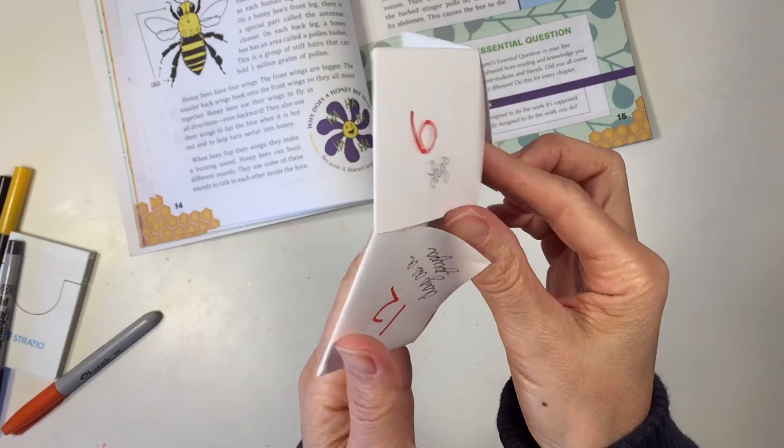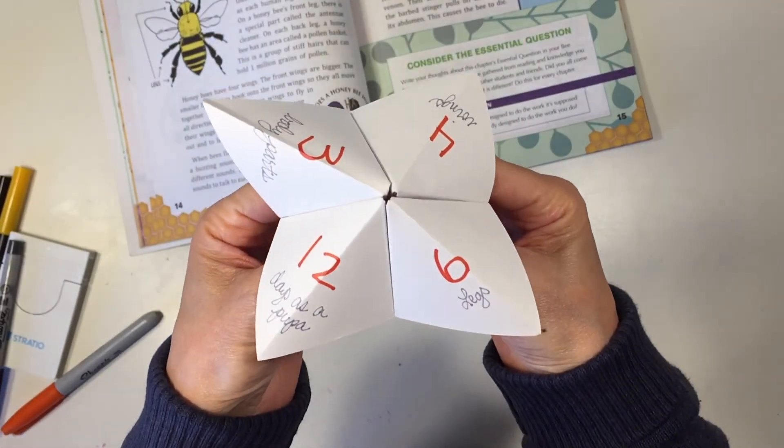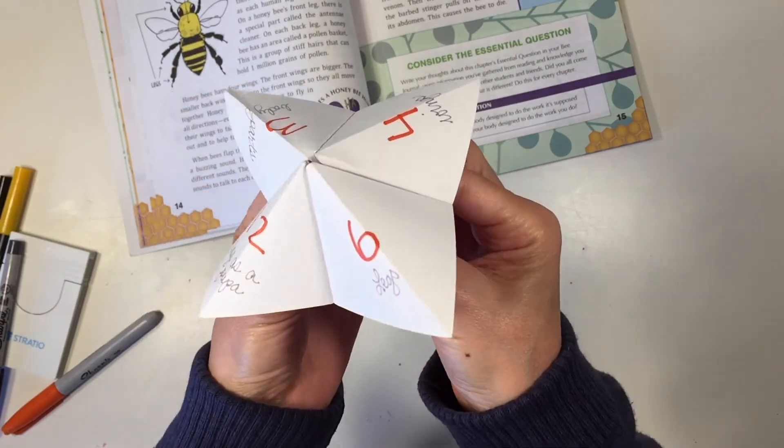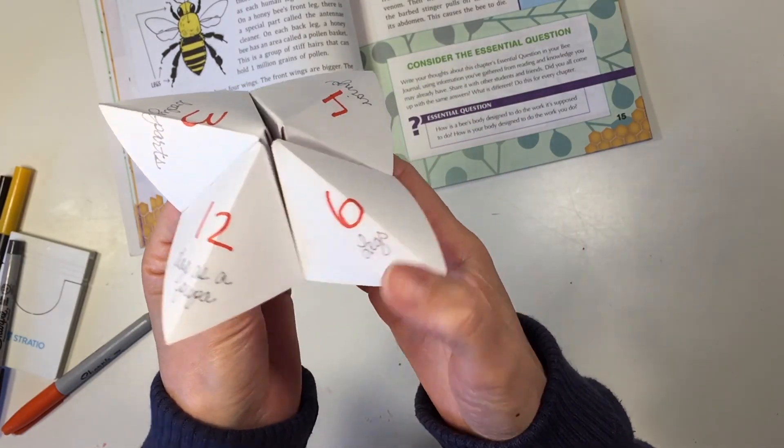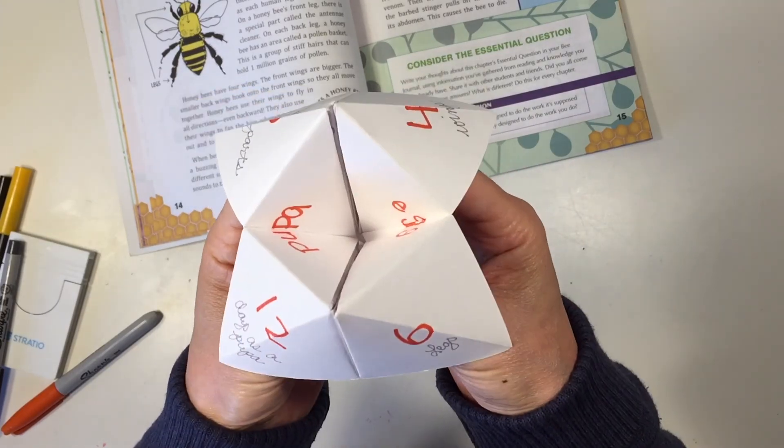The way you play the game, and I've altered it a little bit from the instructions, is basically the kids can begin by choosing one of the numbers. So let's say they choose six as in six legs. One, two, three, four, five, six.